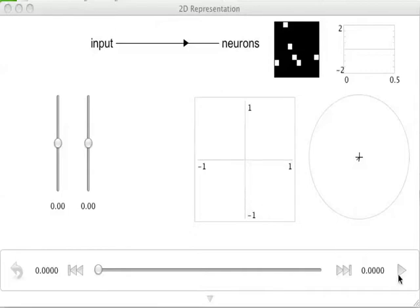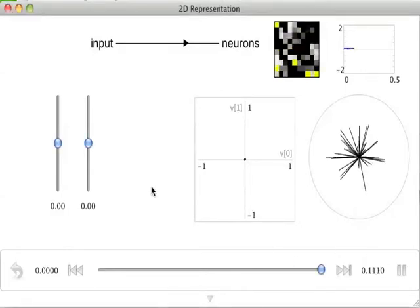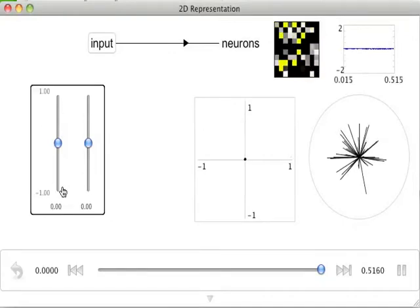Here we again have a simulation of 100 neurons in Nengo. The difference between this simulation and the previous one is that these neurons are now representing a two-dimensional vector space rather than a one-dimensional scalar.